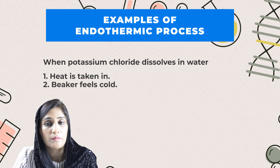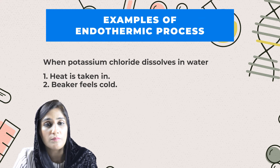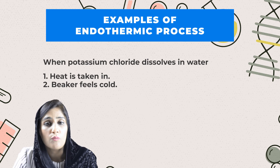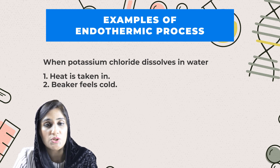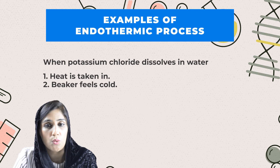Now let's discuss the examples of endothermic processes. The first example is the mixing of potassium chloride in water. When we mix potassium chloride in water, heat energy is taken in and used to dissolve the potassium chloride. As a result the beaker feels cold.